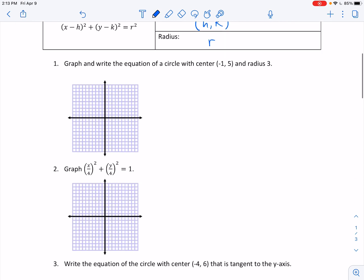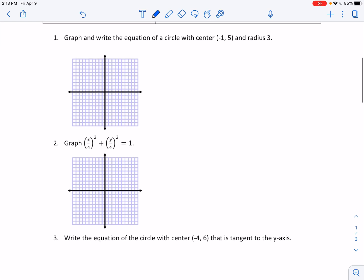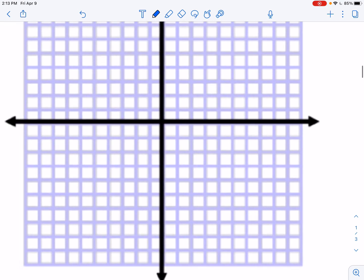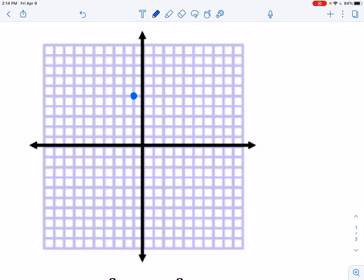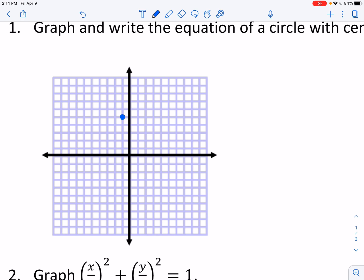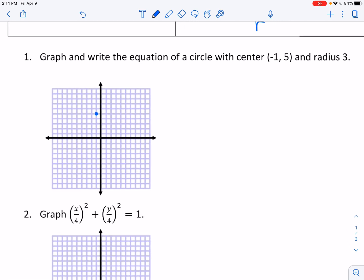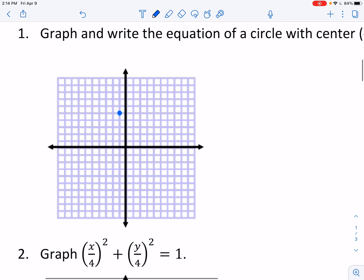So I have a few examples. On this one, graph and write the equation of a circle with center negative 1, 5 and radius 3. So negative 1, 5. I think I'm getting old because all of a sudden I have a hard time seeing the lines. So that's our center. The first thing I'm going to do is graph that center. And then I have a radius of 3.